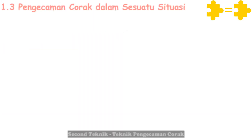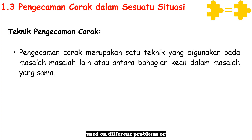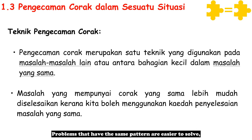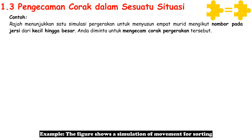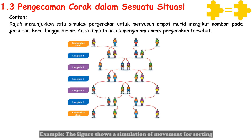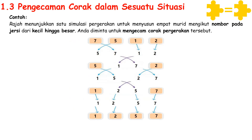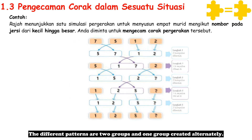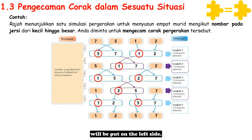Second technique — Teknik Pengecaman Corak. This technique is used on different problems or between small parts within the same problem. Problems that have the same pattern are easier to solve because we can use the same problem-solving method. Example: the figure shows a simulation of movement for sorting four pupils according to the numbers on their jerseys from small to large. The different pattern is two groups and one group created alternately; the same pattern is the smaller value in each group is placed on the left side.